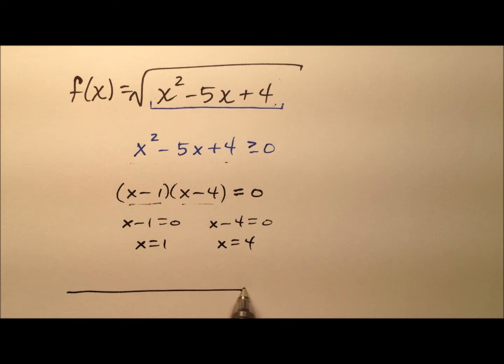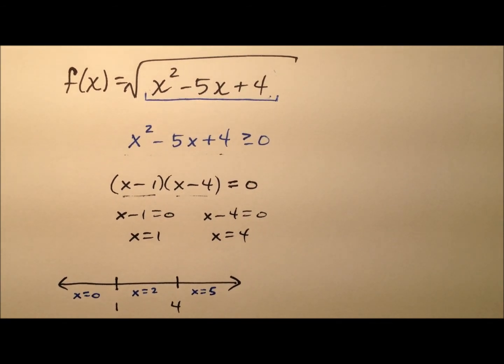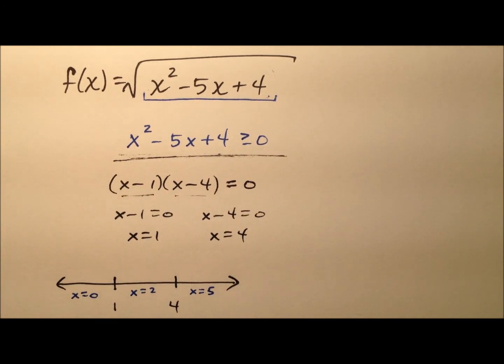What I'm going to do is draw those on a number line, so just plot them here: 1 and 4. I'm going to need to grab a couple of test points—maybe I can use x = 0 for a test point, maybe x = 2, and x = 5, because those are x values in those regions. Then I'm going to plug them in and see if they come out to be true in this inequality.